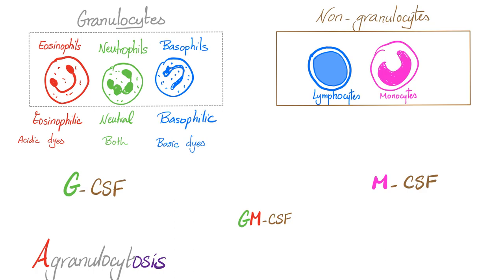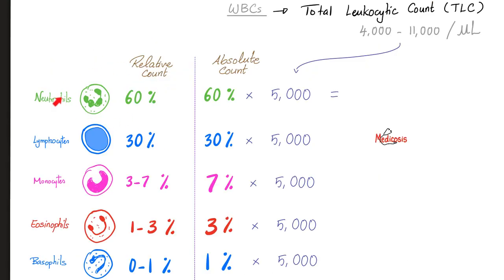There is a disease known as agranulocytosis — absence or low number of granulocytes — meaning decreased eosinophils, neutrophils, and basophils, especially neutrophils, because neutrophils are the most abundant, about two-thirds of your total leukocytic count. Normally white blood cells should be between 4,000 and 11,000. Of this, 60% are neutrophils, lymphocytes 30%, monocytes 3-7%, eosinophils 1-3%, basophils 0-1%. These percentages are the relative count. The absolute neutrophilic count is 60% times the total WBC — for example, 60% times 5,000.